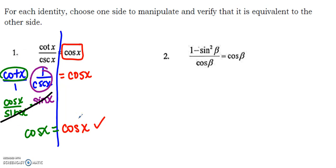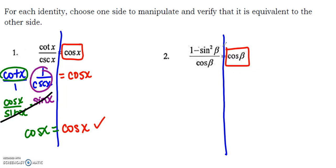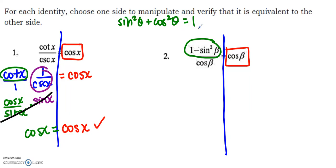For the next one, the more complicated side is the left again. So I'm going to leave cosine completely alone and hope I can do enough work on the left side to simplify it into cosine. Looking at one minus sine squared, hopefully you're recognizing that as a Pythagorean identity, because we've got a one and a trig function squared. From our reference sheets, sine squared theta plus cosine squared theta equals one, and what I have here is one minus sine squared theta.